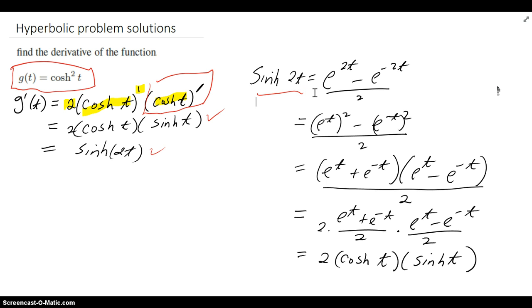Sinh 2t, written with the definition, is to put the 2t here, negative 2t there, with subtraction for sinh. And then, that is equal, algebraically, to this step. It's a difference of two squares now, so it factors apart as a plus and a minus.